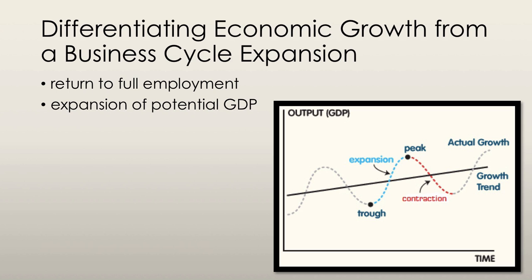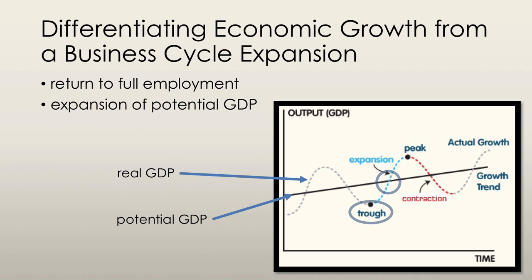Now let's differentiate between economic growth and a simple business cycle expansion. Real GDP can increase for two reasons: either the economy is returning to full employment during a business cycle expansion, or potential GDP itself is increasing. A return to full employment during an expansion is not really economic growth — it's just a restoration of equilibrium following a previous recession. When real GDP rises from a trough back up to potential GDP, that is not an increase in economic growth; it's simply the economy returning to full employment with no increase in potential GDP.